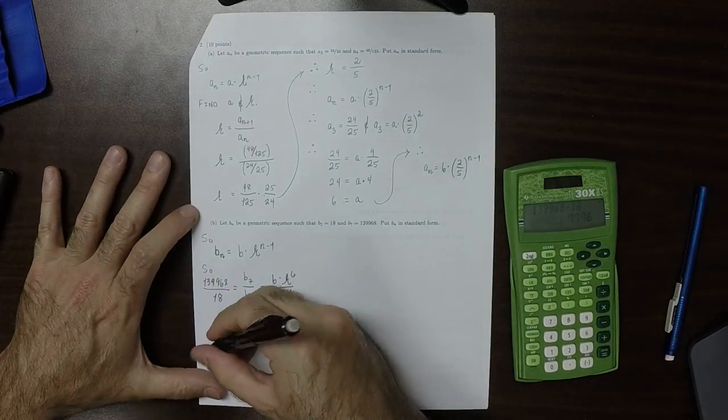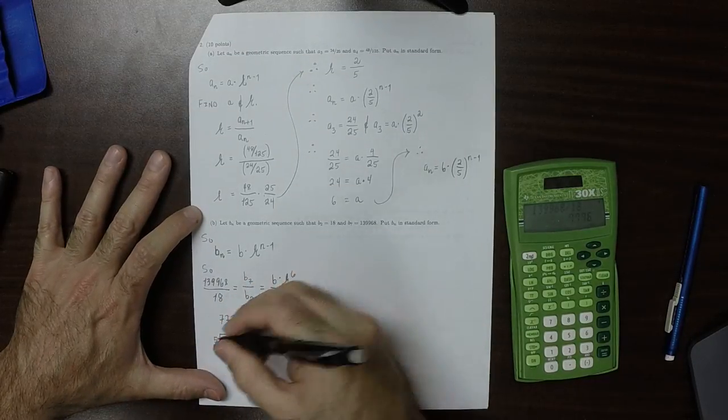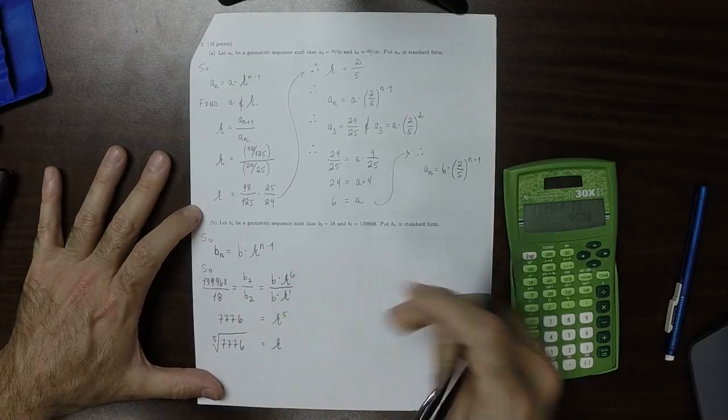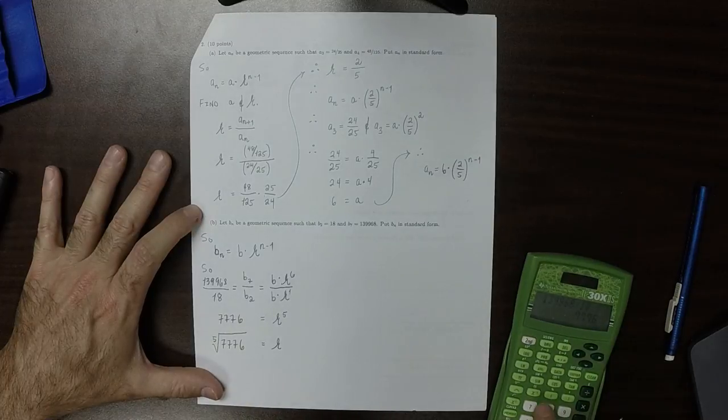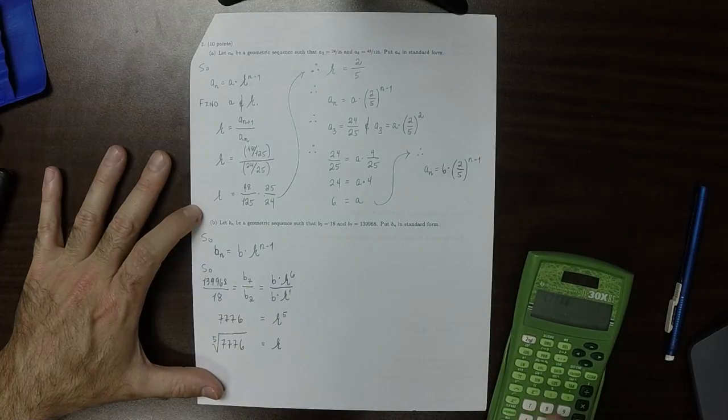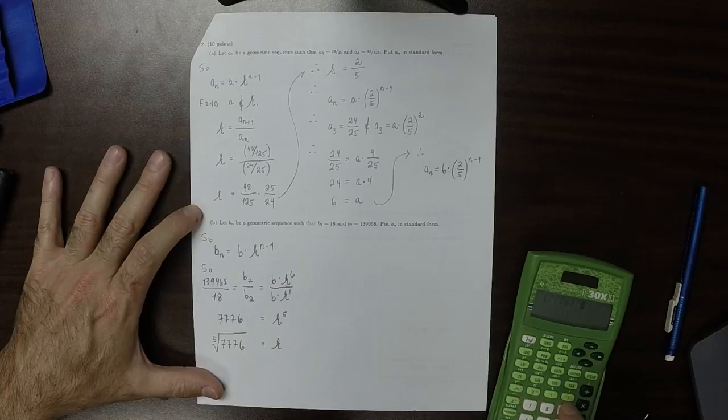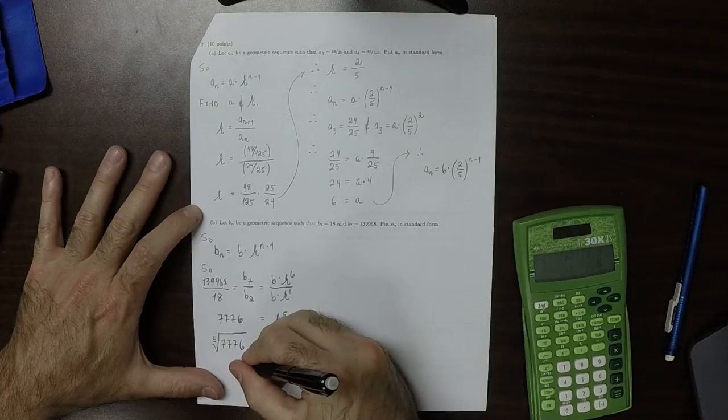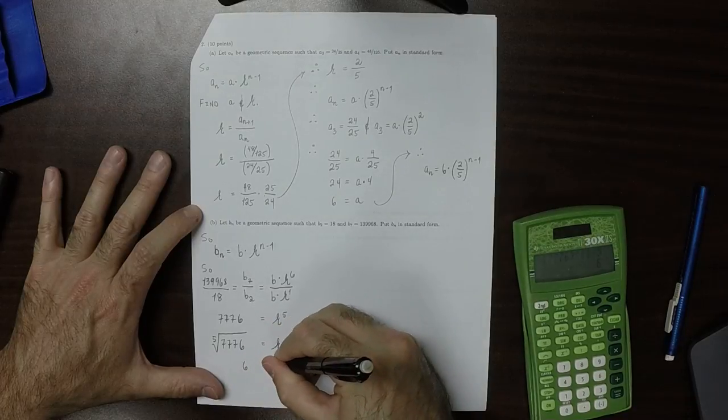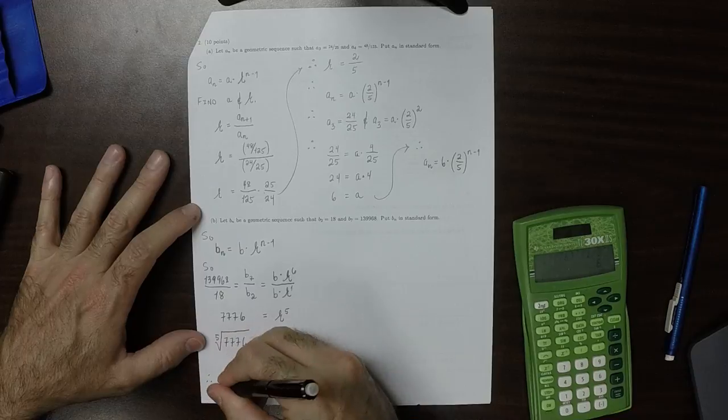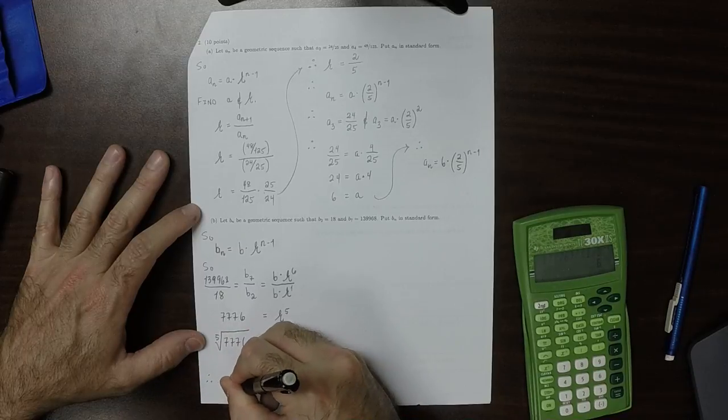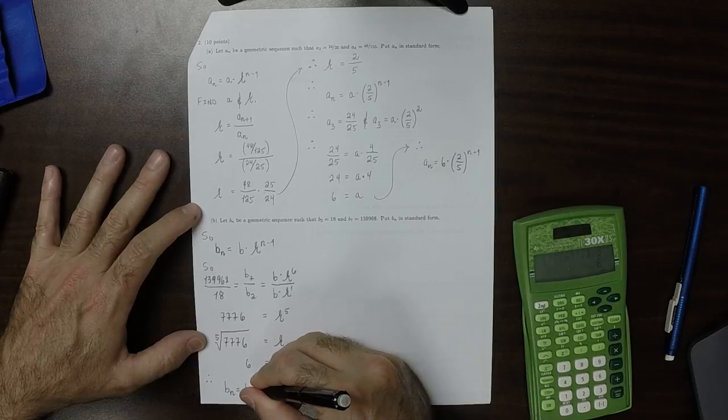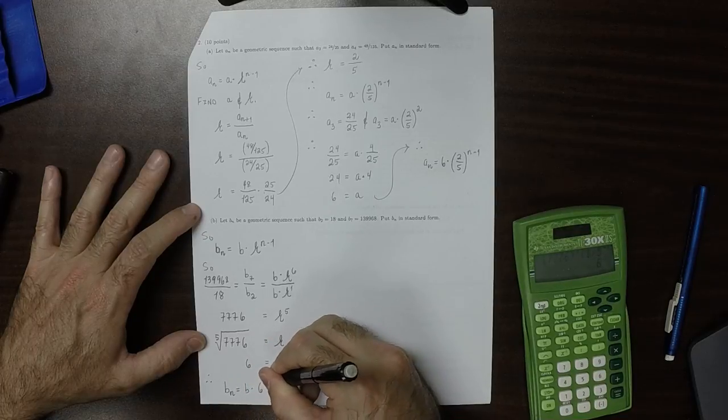We can compute the fifth root of this. So the fifth root of 7776 is r. 7776 with fractional exponent 1/5 is 6. Therefore, we know that bₙ is the unknown b multiplied by 6 to the power n minus 1.